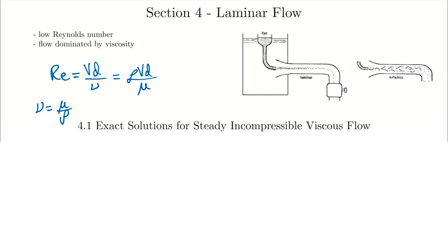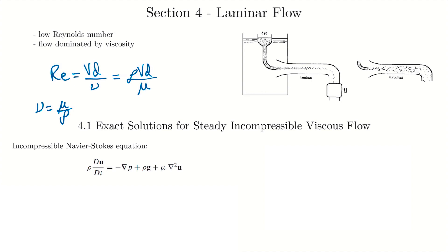We'll start by looking at exact solutions for steady incompressible viscous flow, and in section 4.1 we'll have a few subsections looking at different specific geometries. The Navier-Stokes equation we derived in section 3 for incompressible flows is our starting point — incompressible is our first assumption because the equation is simpler to solve, giving us a chance for exact solutions. One of the challenges with the Navier-Stokes equation is that it has this nonlinear advection term, which makes it very difficult to solve and prevents exact solutions when it's present.